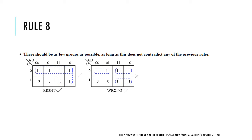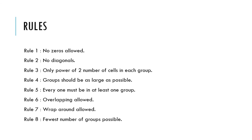Rule number eight: there should be as few groups as possible, as long as it does not contradict any of the previous rules. As we saw, we could get 3 groups, but our aim is to have larger and fewer groups. In the example, 2 larger groups are preferred over 3 smaller groups. Together, these are the rules to follow when grouping the ones in a Karnaugh map.